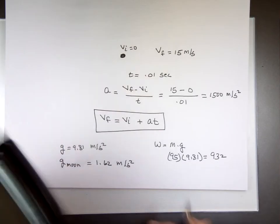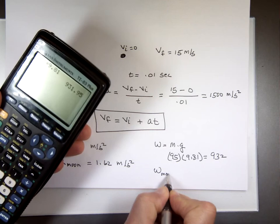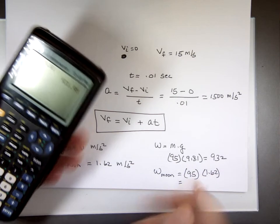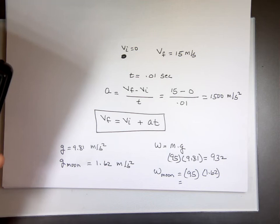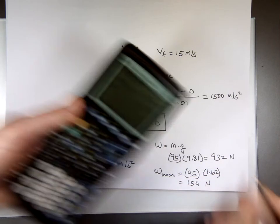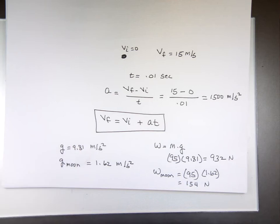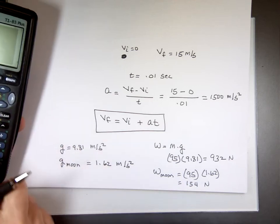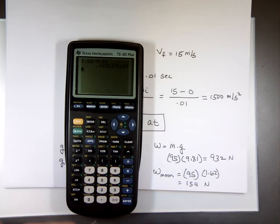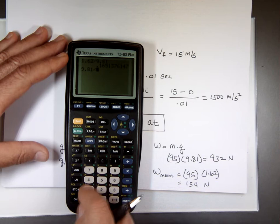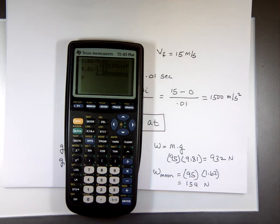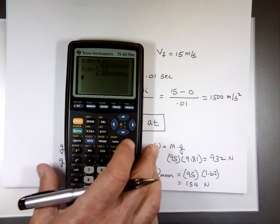If you take me to the Moon, my mass doesn't change, but I'm going to weigh roughly one-sixth of that — about 153 or 154 Newtons. If you divide 1.62 by 9.81, you get 0.16, which is roughly one-sixth. Or reversed: 9.81 divided by 1.62 gives you about 6. That's why we say on the Moon you weigh one-sixth of what you weigh on Earth — because Moon's gravity is one-sixth of Earth's gravity.